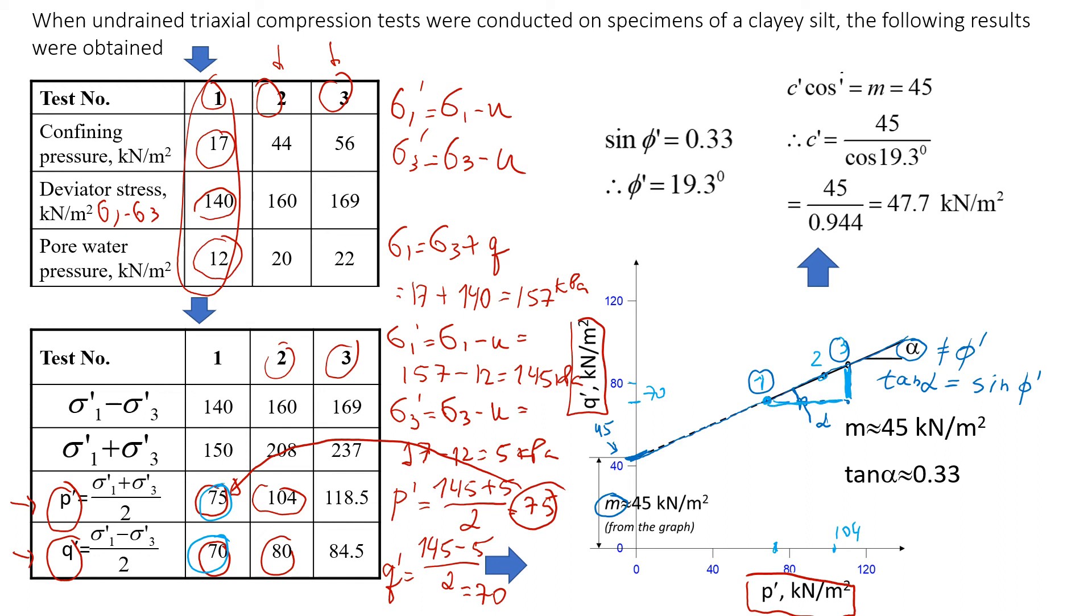It will be this divided by this one. I already did some calculations and I found that tangent alpha is equal to 0.33. What we do next is we're going to convert this value of alpha to friction angle using this formula. We'll say that sine of friction angle equals 0.33. From here friction angle under effective conditions is equal to 19.3 degrees.